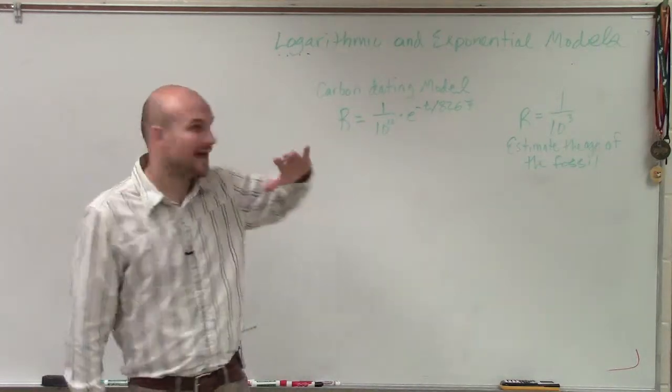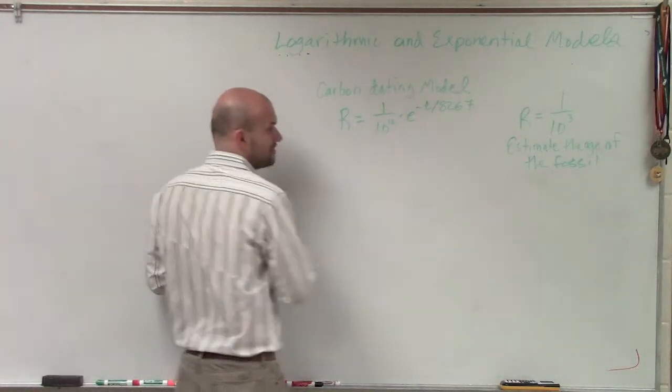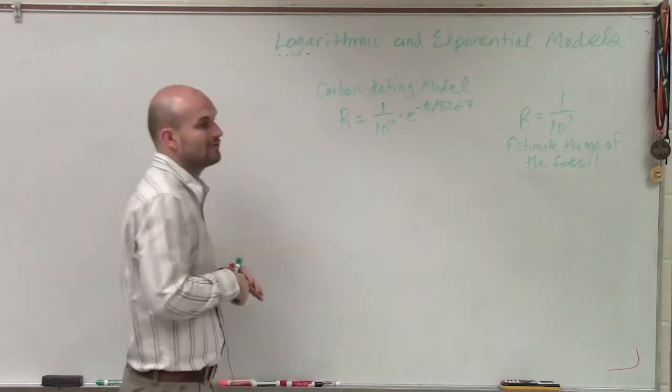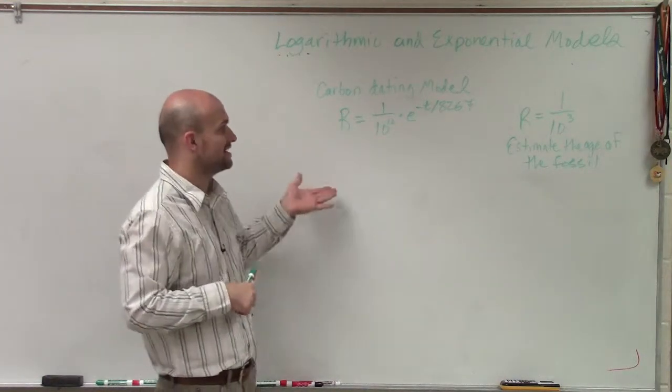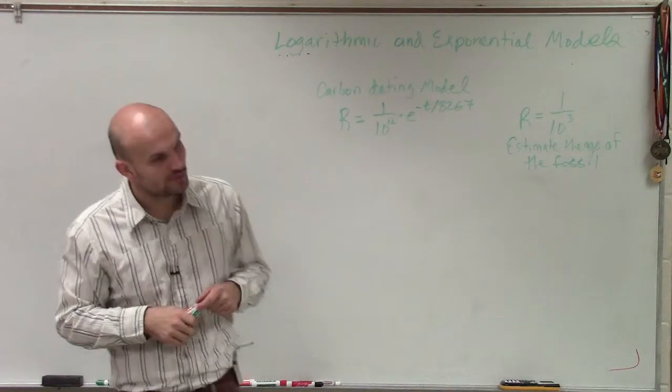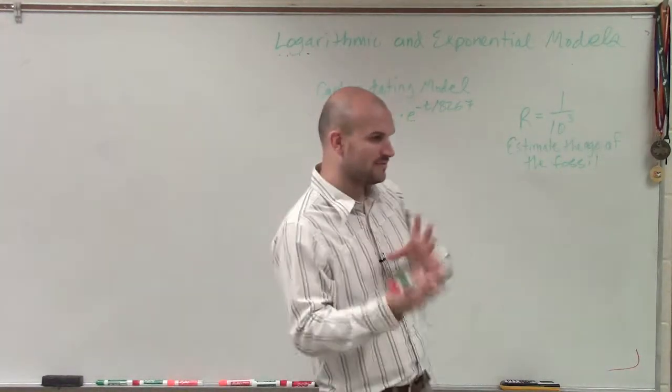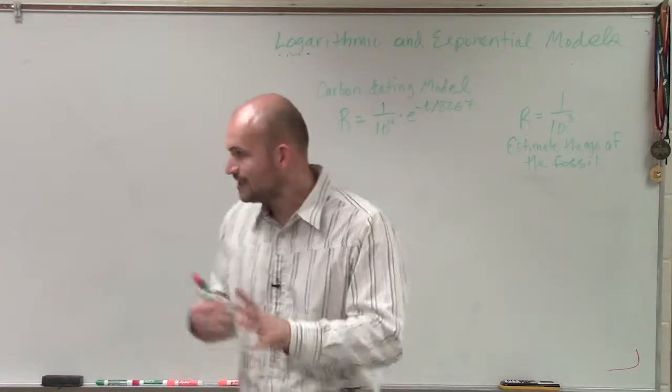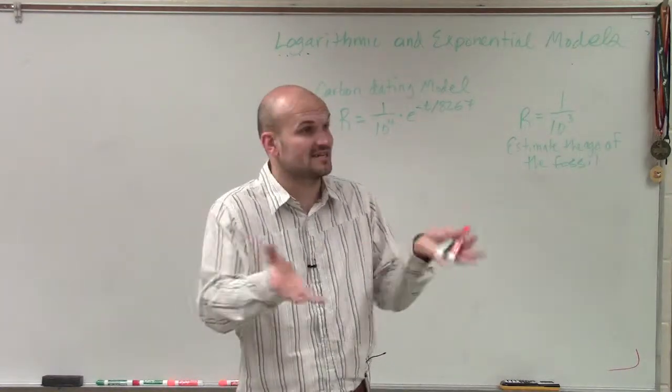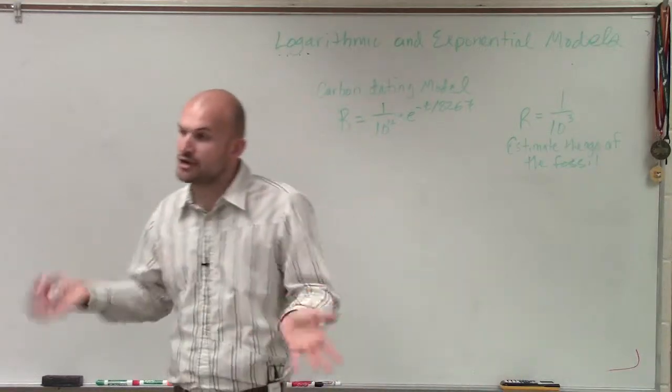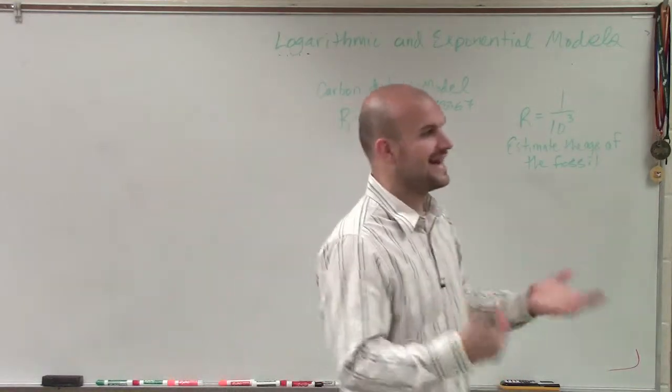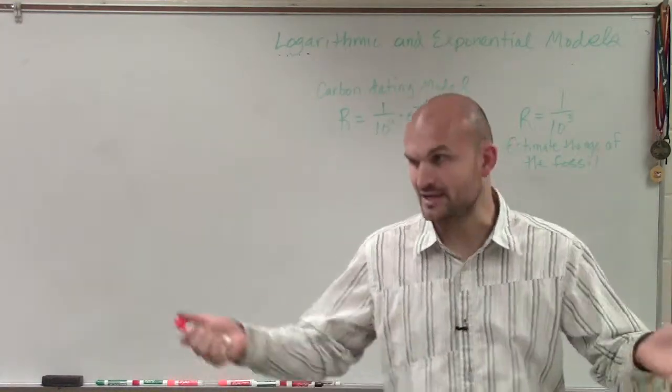And what this is, the amount of carbon is going to decrease at a certain model. And the model for carbon dating is r equals 1 over 10 to the 12th times e to the negative t divided by 8,267. So that's for a ratio for what they call the carbon-14 to carbon-12. And it's really just measuring how much carbon is going to be left in the fossils. And when they are able to determine how much carbon is in the fossils, that allows us to determine how old something is.